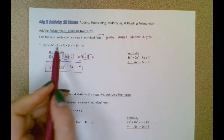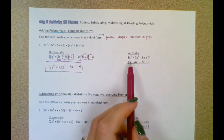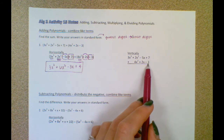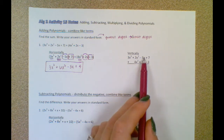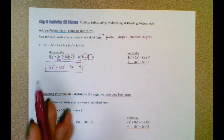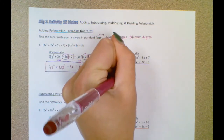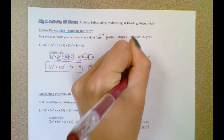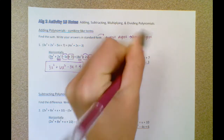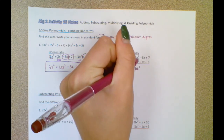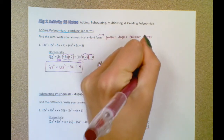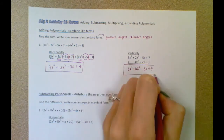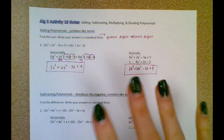Or you could set up this problem vertically. Make sure when you set it up vertically you write the like terms so they match each other — the x squared terms, x terms, and the constant. So I have 3x to the third. 2 plus 4 is 6x squared. This is negative 5 because of the minus sign, so negative 5 plus 2 is negative 3x. And 7 minus 3 is positive 4. As you can see, we got the same answer both ways. I don't care which method you use.